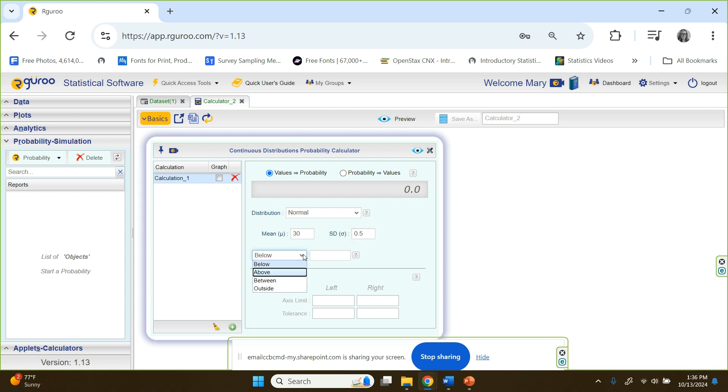It said greater than 31, so we're going to choose above. And then our sample mean goes here at 31, because that's where we're going to draw a line in the model and shade above at the value 31. So we'll click here and we get our probability.